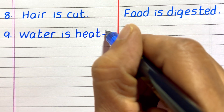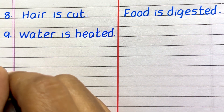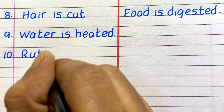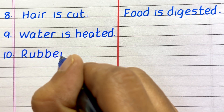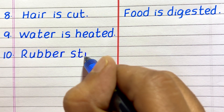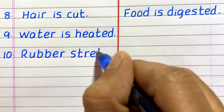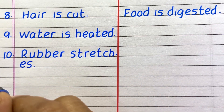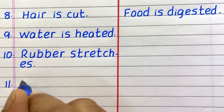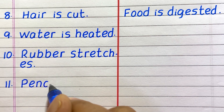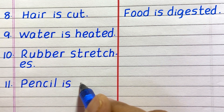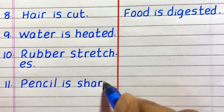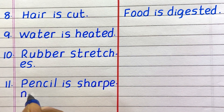Ninth example of a physical change is water is heated. Tenth, rubber stretches. Eleventh, pencil is sharpened.